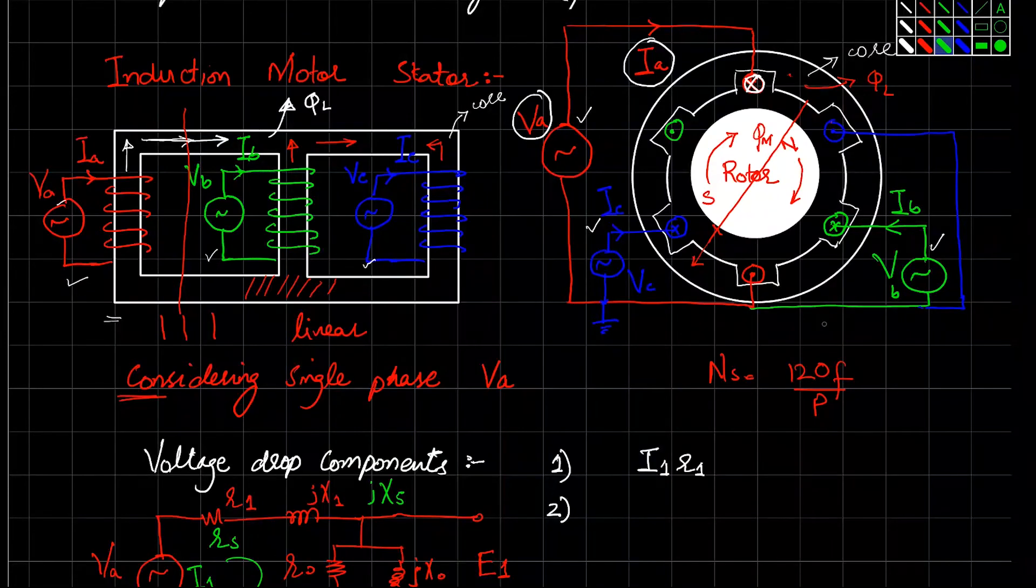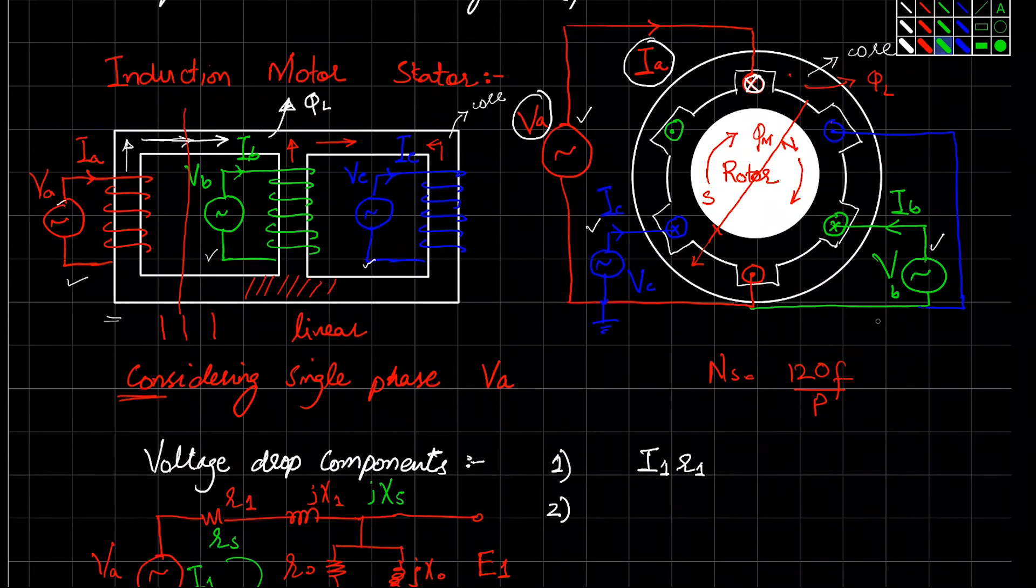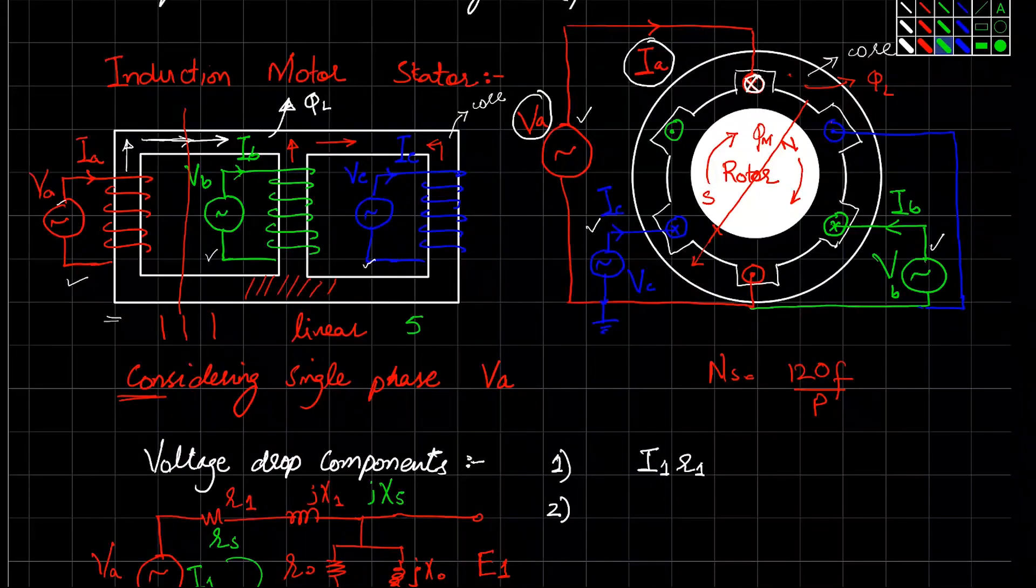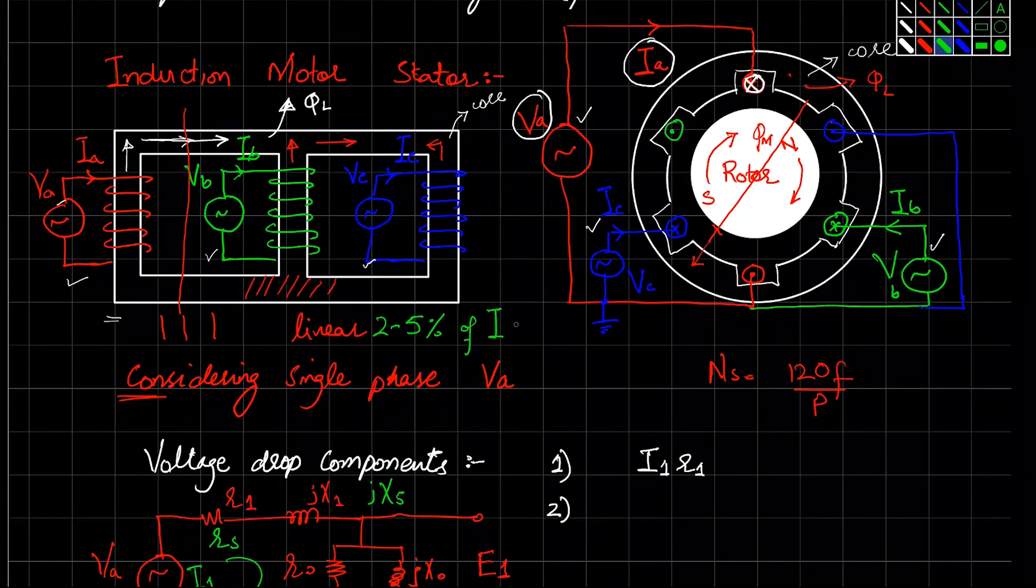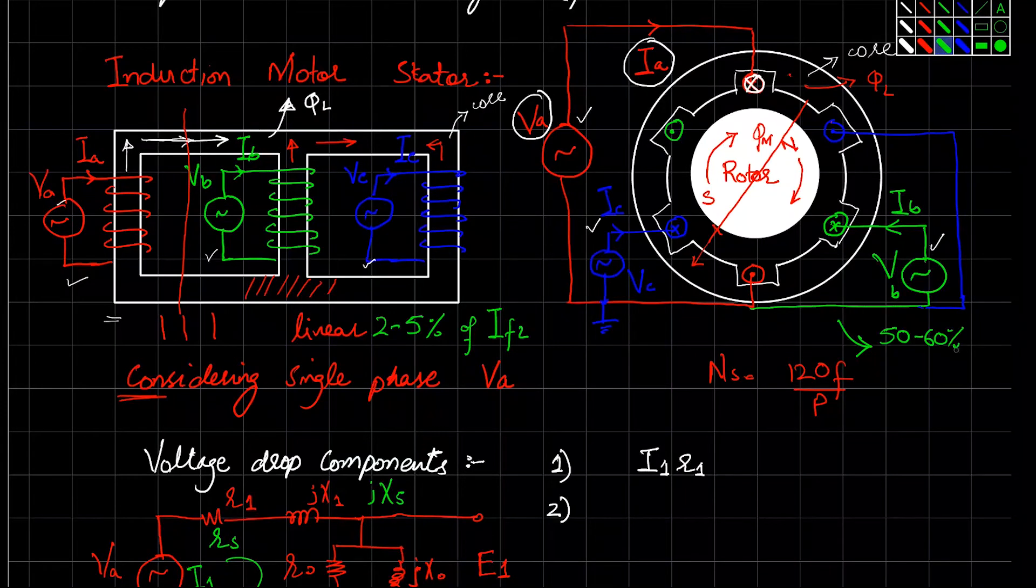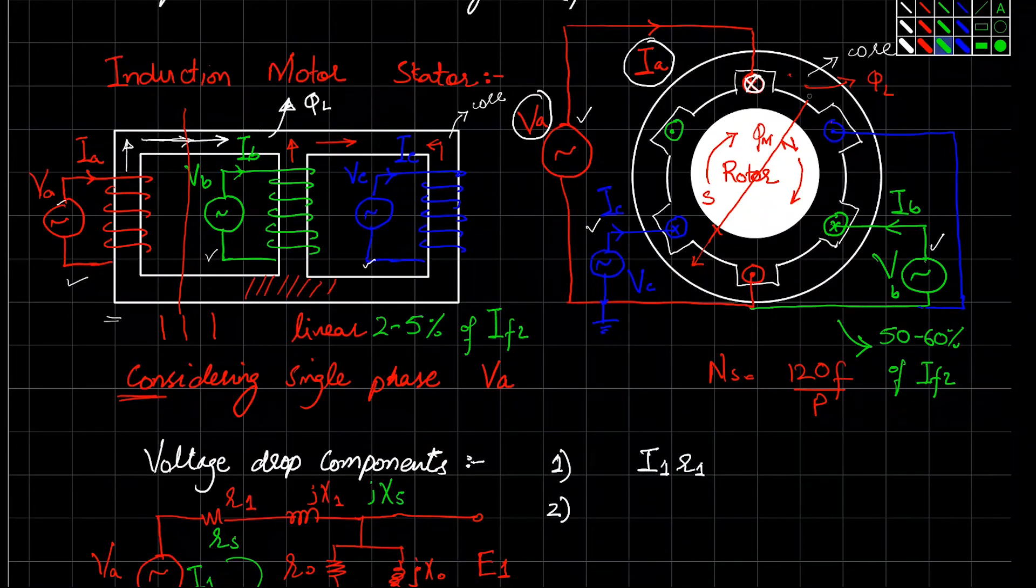The no-load current of transformer is only 2 to 5 percent of full load current, whereas in induction motor you have 50 to 60 percent of the full load current.